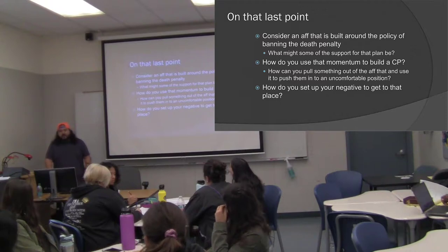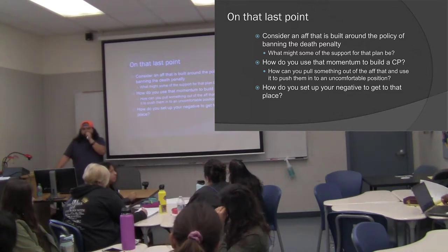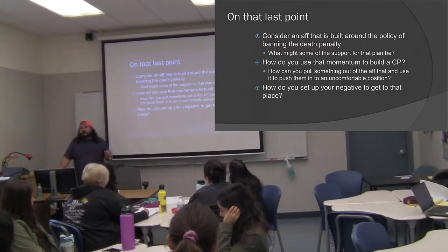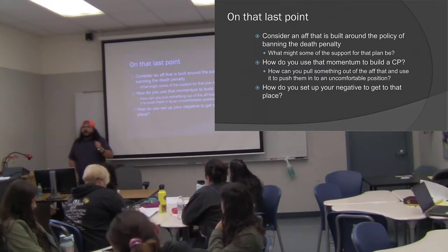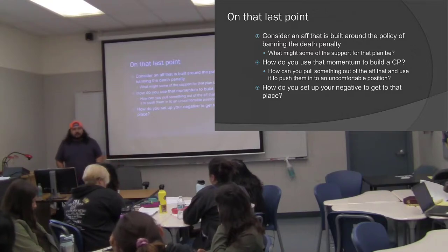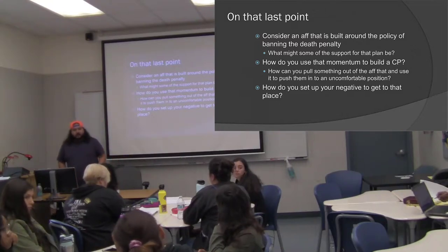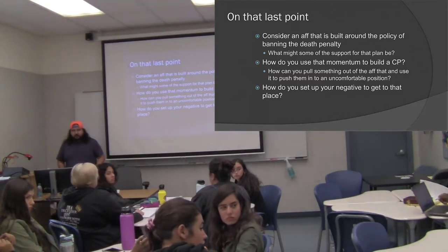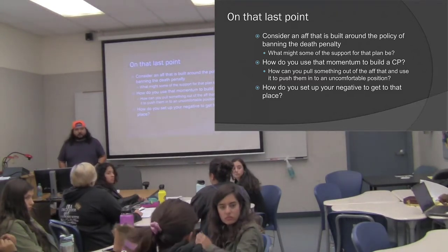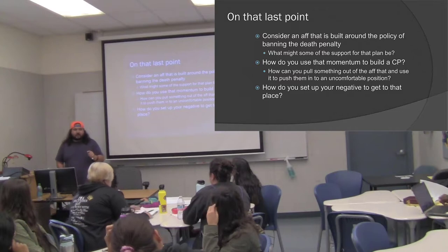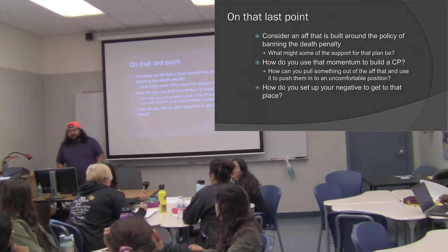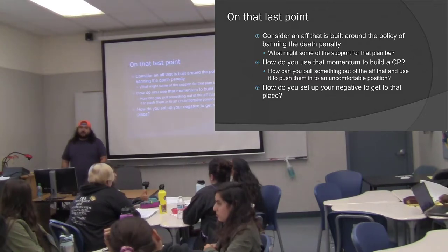How can you use that momentum to build a counter plan? The violations of human rights, prejudice, vulnerable people needing protection because the law is biased — how can you flip that? You could increase rehabilitative efforts or some kind of rehabilitative policy. But what's wrong with that idea? It could be permed. Yes — it could be permed, because there's no exception built in; it's just a ban.